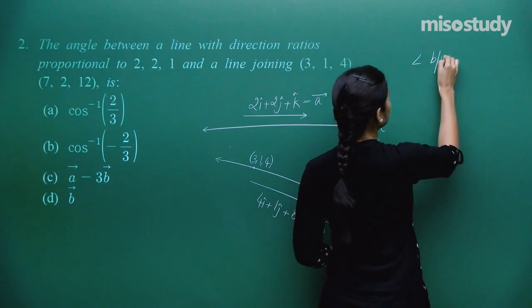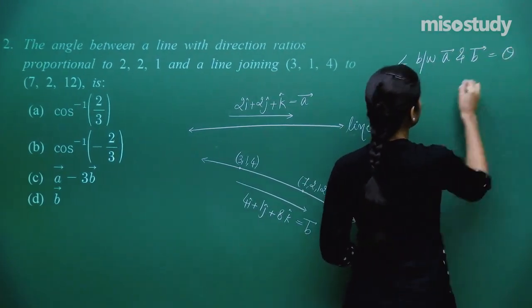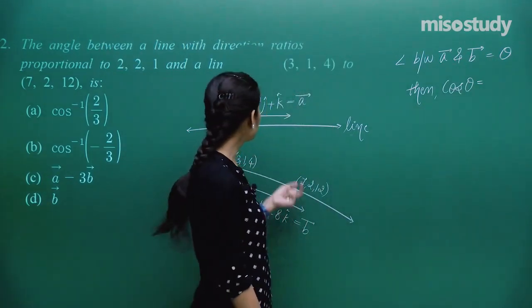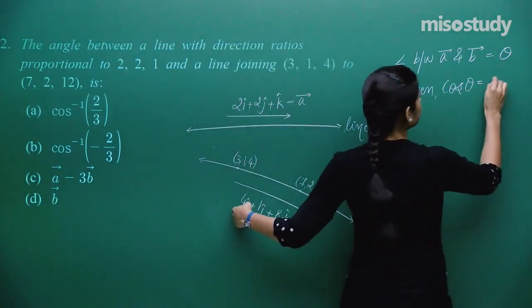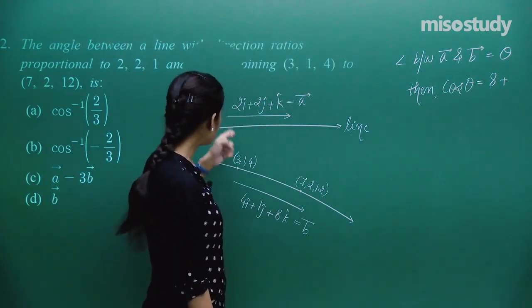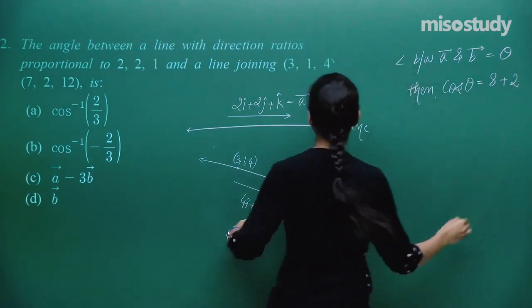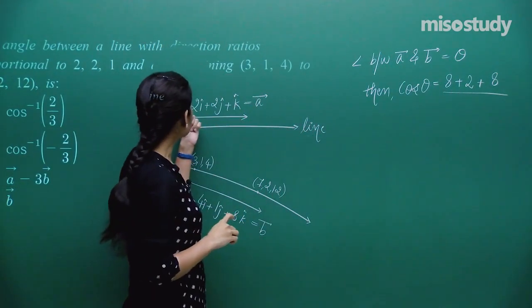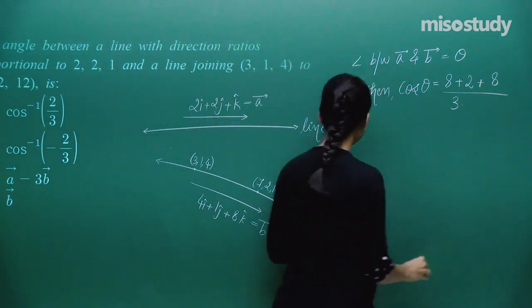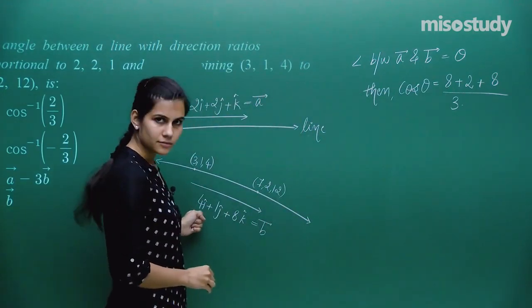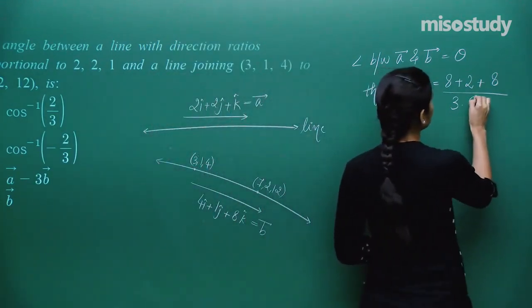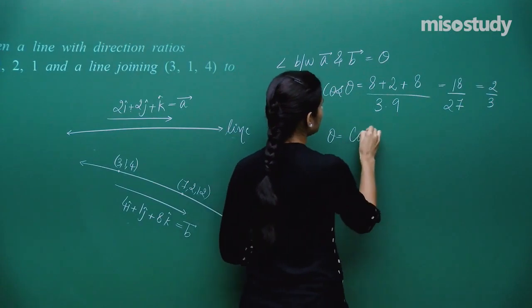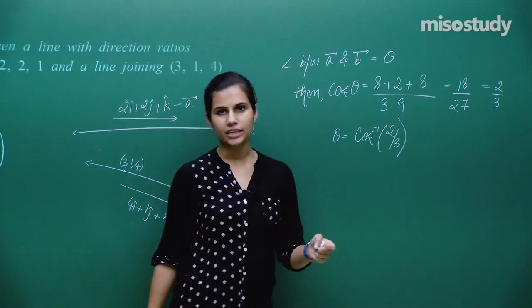cos θ = (a · b) / (|a| |b|). The dot product is 2×4 + 2×1 + 1×8 = 8 + 2 + 8 = 18. |a| = √(4+4+1) = √9 = 3. |b| = √(16+1+64) = √81 = 9. So cos θ = 18/27 = 2/3, giving θ = cos⁻¹(2/3).